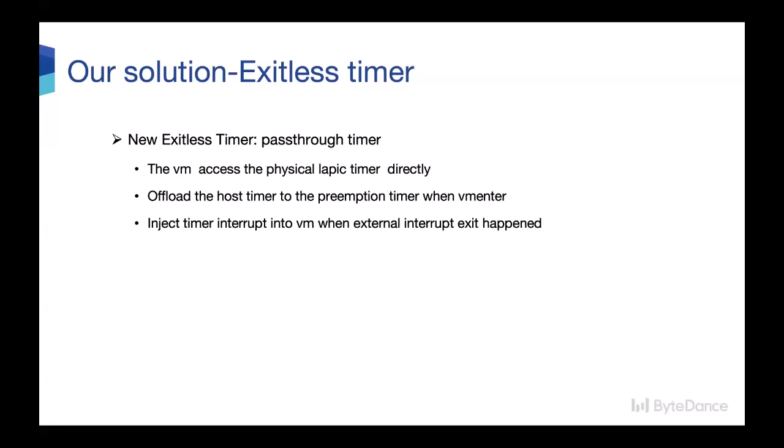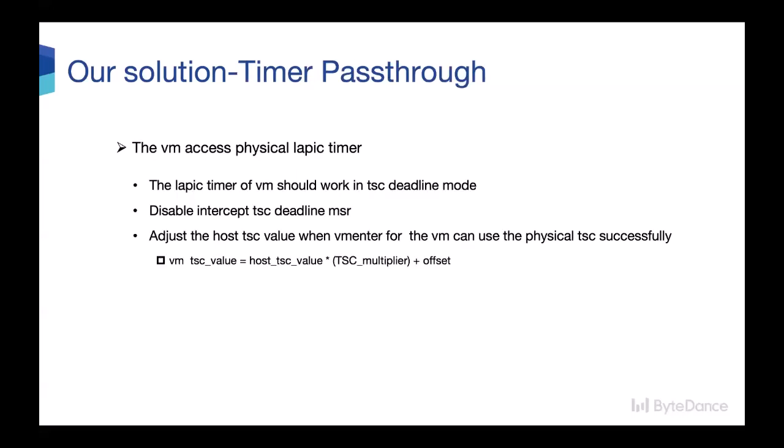Let's see our solution. To overcome the problems in existing solutions, we proposed a new exit-less timer — we called it a pass-through timer. In a pass-through timer, the VM can use a physical LAPIC timer directly. So the host timer will be offloaded to the preemption timer at VM entry. When an external interrupt exit happens and the external interrupt vector is a local APIC timer vector, we can use the physical LAPIC timer. The LAPIC timer of the VM should work in TSC deadline mode, and in KVM, the intercept of the TSC deadline MSR should be disabled.